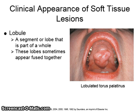The next clinical appearance is a lobule. A lobule is a segment or lobe that is part of a whole. These lobes sometimes appear fused together. The picture on the right shows the lobulated torus palatinus.